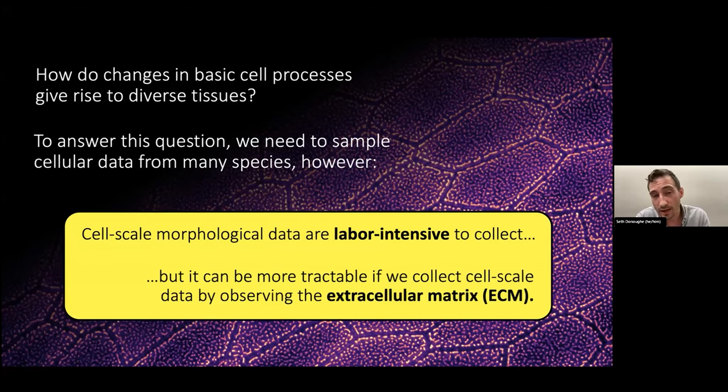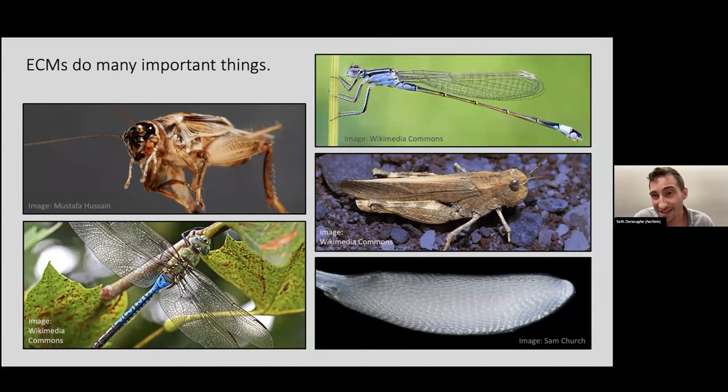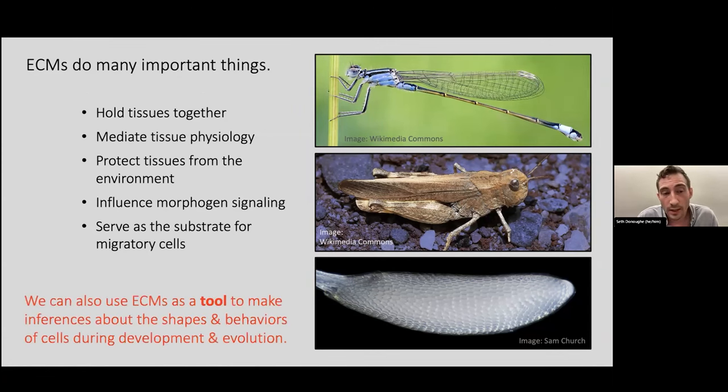But what I have found in my postdoc is that it can be more tractable if we collect cell-scale data by observing the extracellular matrix instead of the cells themselves. So the extracellular matrix called the ECM—I'm sure you've heard of it—ECMs are all around us. These are a bunch of species that I study. When you look at these species of insects, everything you see on them is an ECM. ECMs do a lot of important things. They hold tissues together, mediate tissue physiology, protect tissues from the environment, influence morphogen signaling, and serve as the substrate for migratory cells. We can use ECMs as a tool to make inferences about the shapes and behaviors of cells during development and evolution.